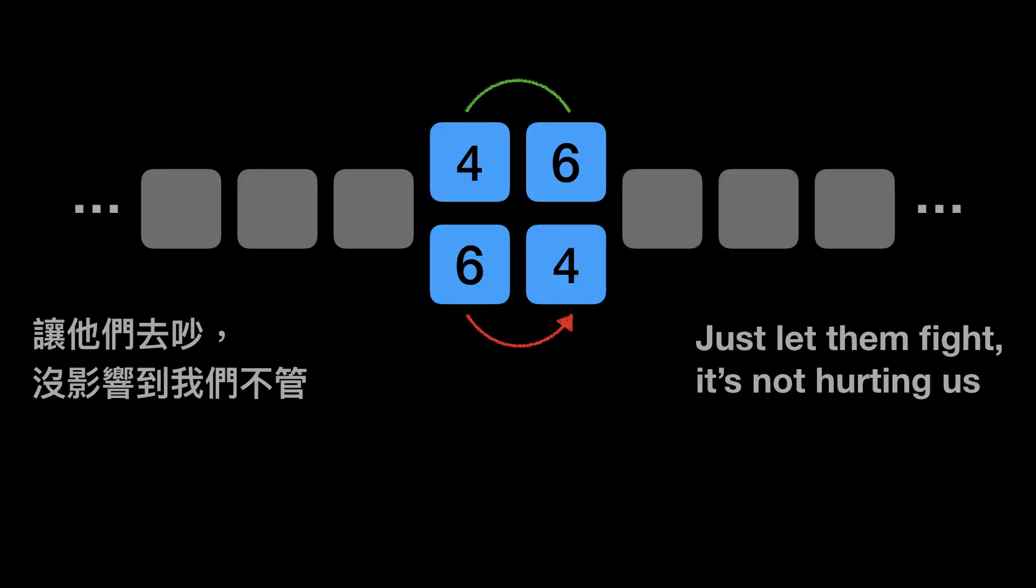So instead of recalculating the rage from every number, as long as we know the original rage of the sequence and add the rage change between the two numbers, it's easy to know the new rage of the sequence after swapping.